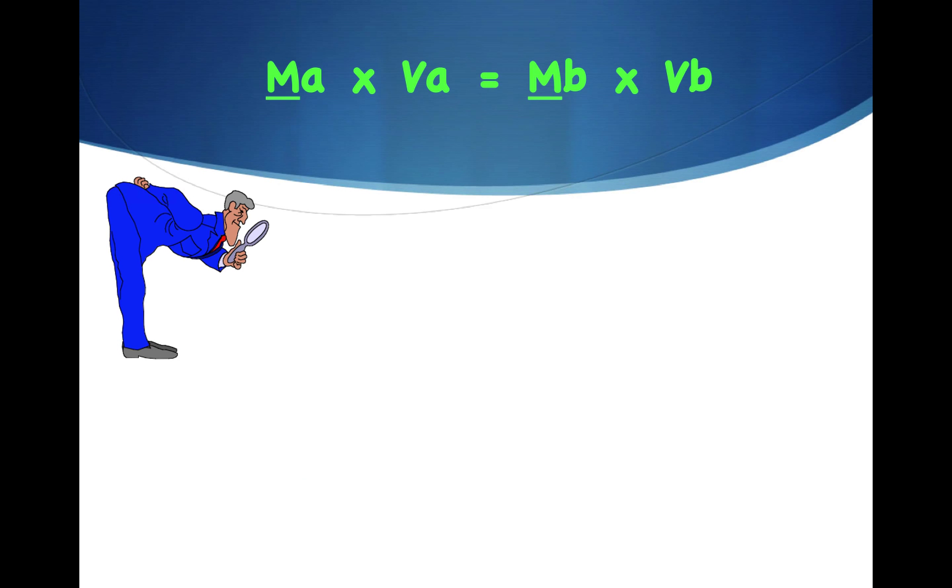The formula we're going to use to calculate the molarity of the unknown is MA times VA equals MB times VB. Now remember, molarity is defined as moles per liter. When we reach the end point, the moles of acid will be equal to the moles of base. That's what neutralization is.